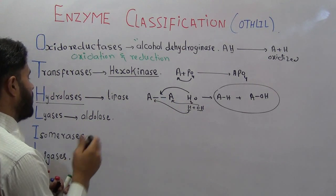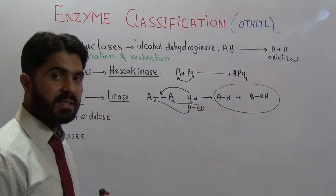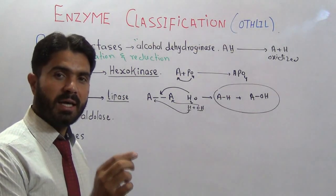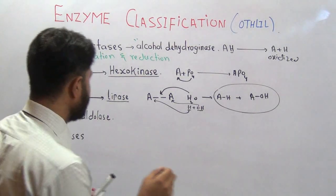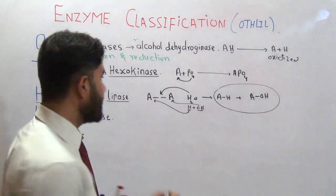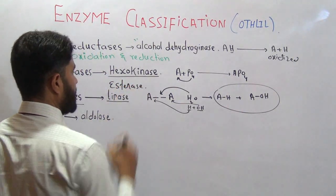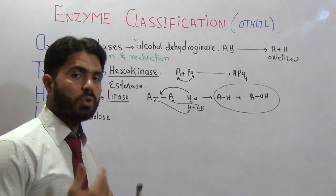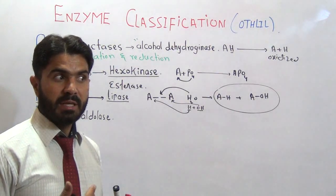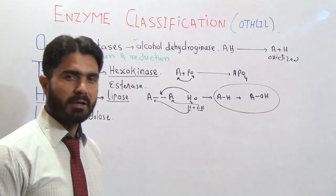An example of a hydrolase is lipase, an enzyme which breaks down bonds in a lipid molecule. Another example is esterase — enzymes which catalyze the breakdown of esters, and an ester is a kind of lipid.